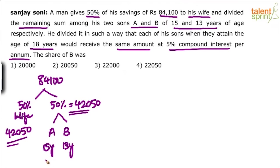When would A become 18 years old? After 3 years. When would B become 18 years old? After 5 years. So basically, A's amount is kept in the bank for 3 years and B's amount is kept in the bank for 5 years. They will each attain 18 years. What the bank pays to A after 3 years and the bank pays to B after 5 years is the same.